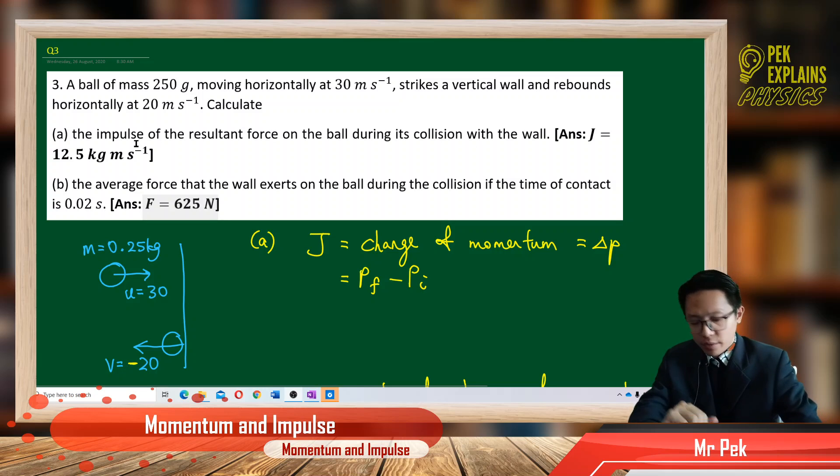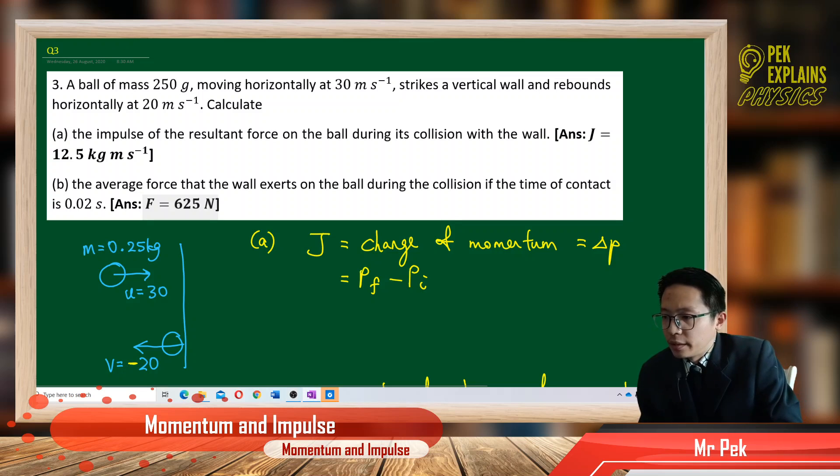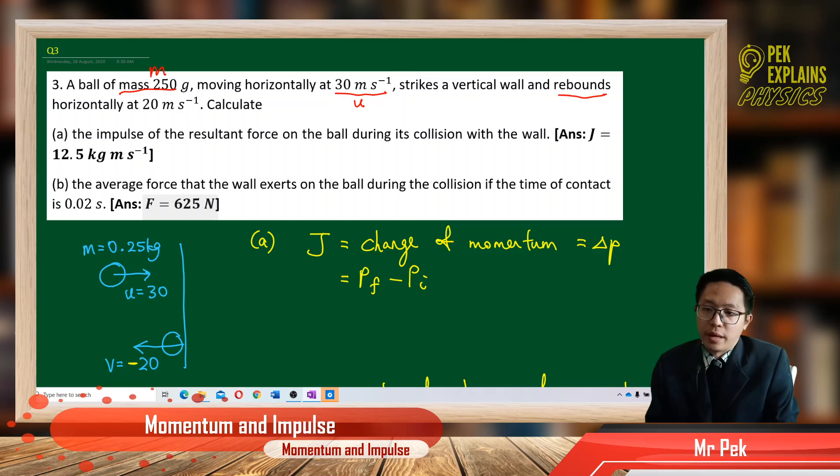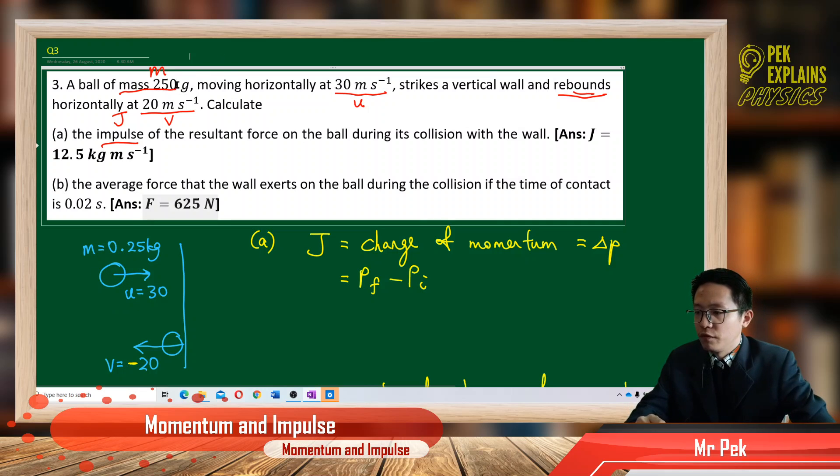So let us first identify what information given. It has a mass. This is actually the mass and moving at 30 meter per second, so this is the initial velocity. Strikes a wall and rebound. I mean it's change direction. At 20 meter per second. So this is the final velocity. Alright, so find the impulse of the resultant force during the collision.